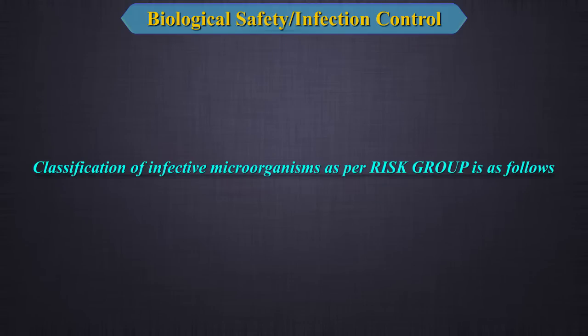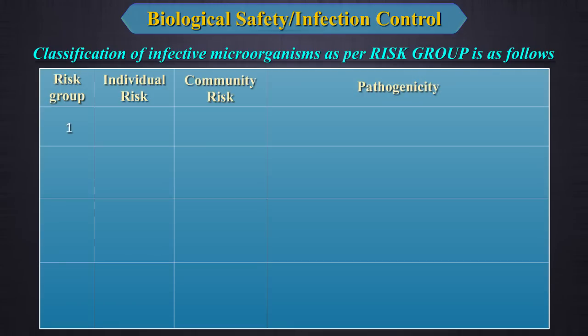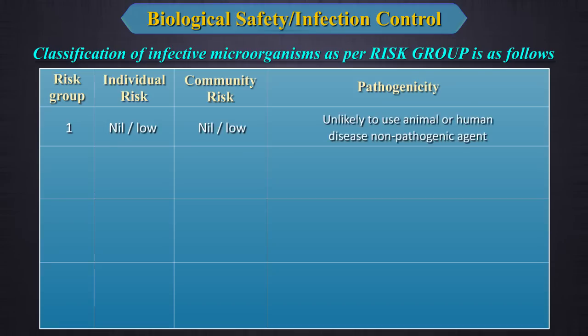As we can see in the table, Risk Group 1 is where the individual risk is nil or very low and the community risk is also nil to low. The pathogenicity here is that it is unlikely to cause animal or human disease — it is a non-pathogenic agent.